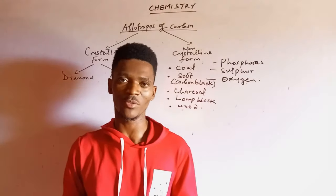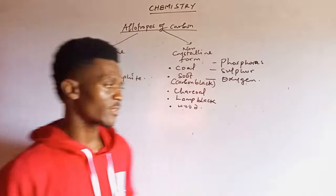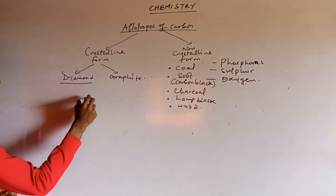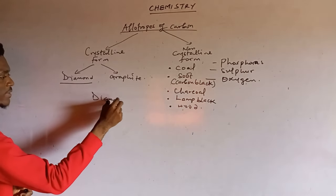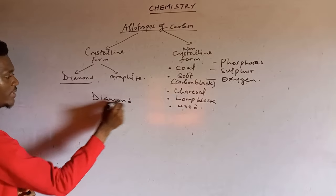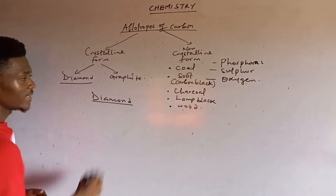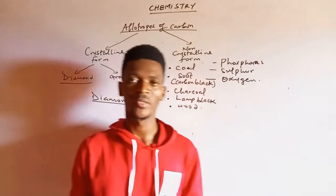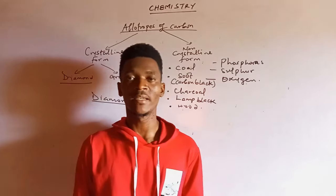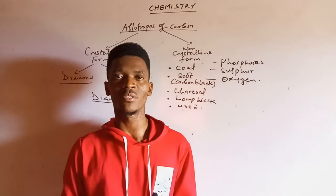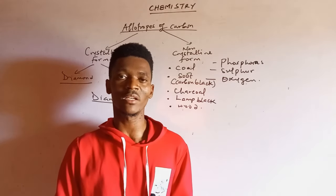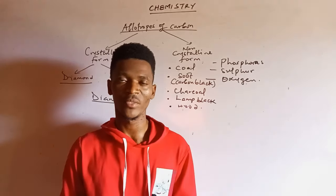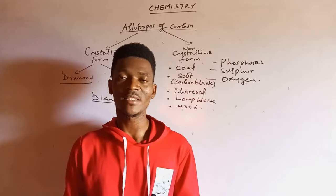We start by looking at the crystalline forms of carbon. Let's look at diamond. Diamond is considered to be the hardest naturally occurring substance, and diamond happens to be the purest naturally occurring form of carbon.